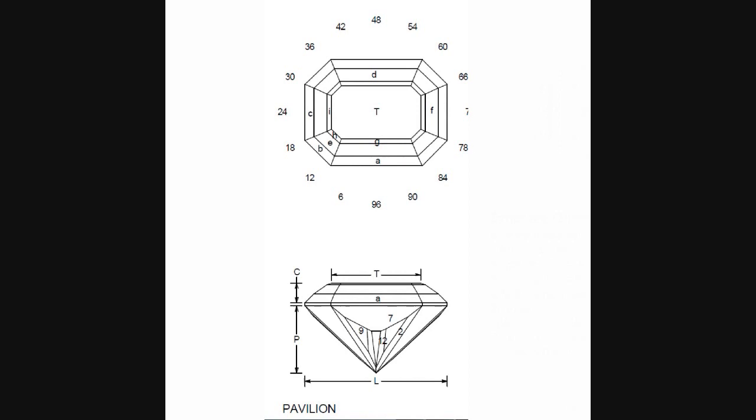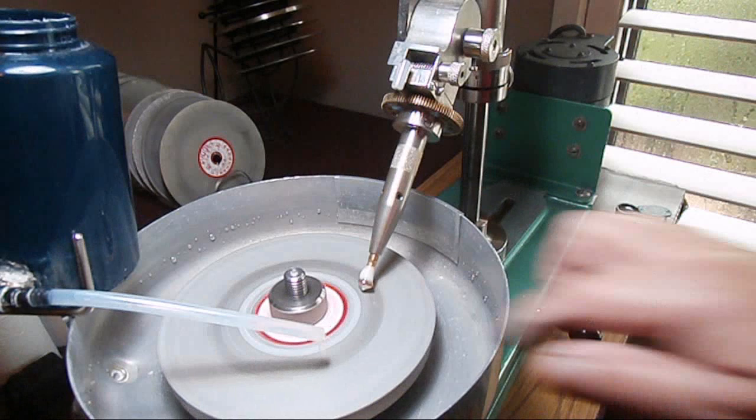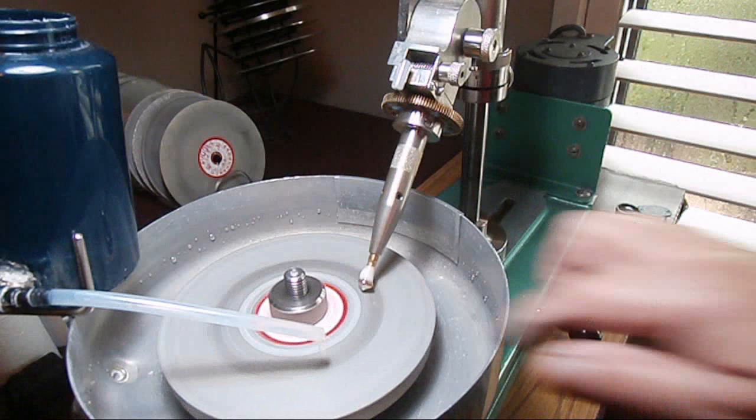Here is the design I intend to facet which is an emerald cut design and I thought it suited the shape of the moissanite. So with most rectangular designs or even with squares, the first four facets are cut to a temporary center point and later on you'll be cutting more facets and that center point will be removed.